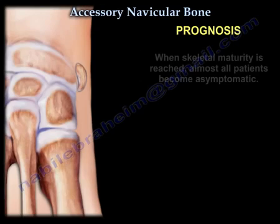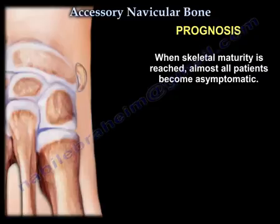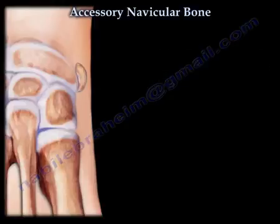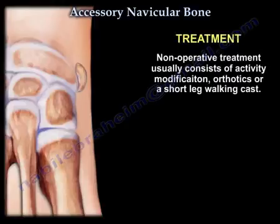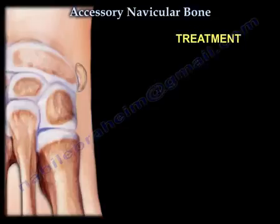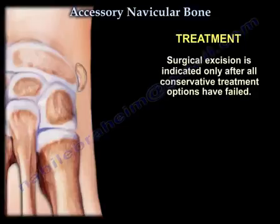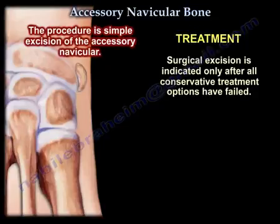Regarding prognosis, when skeletal maturity is reached, almost all patients become asymptomatic. Non-operative treatment usually consists of activity modification, orthotics, or a short leg walking cast. Surgical excision is indicated only after all conservative treatment options have failed.